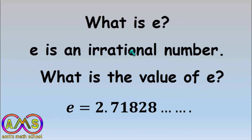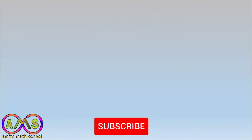We can say e is a non-terminating, non-repeating decimal fraction number. We use e approximately as 2.71828. When we use e as the base of a logarithm we get log base e of x, which we can also write as ln x. Now let's see how we can derive this formula.